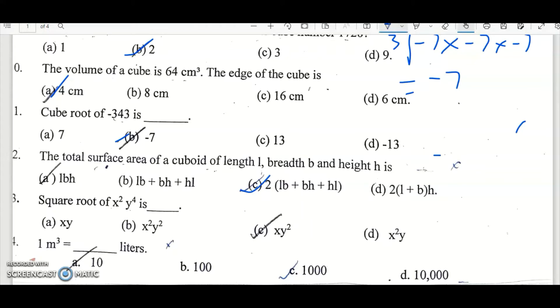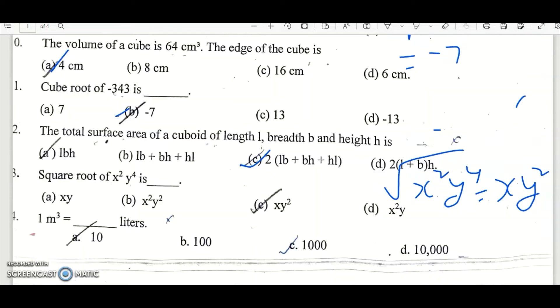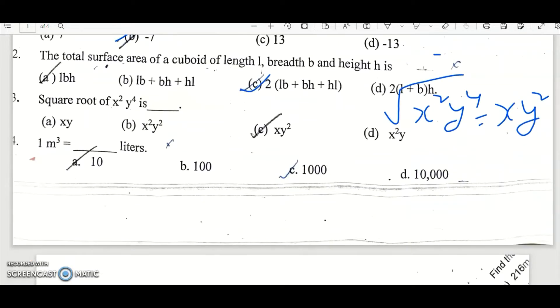The square root of X square Y power 4 is, the square root of X square Y power 4 square root equal to X Y square. So option C is the right answer. Question number 14. 1 meter square is equal to how many liters? That is 1000 liters. Option C is the right answer.